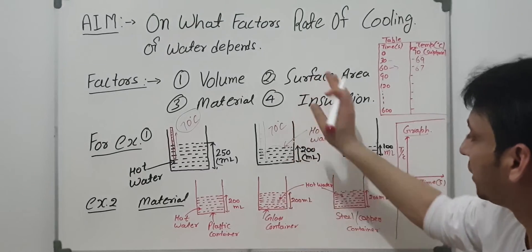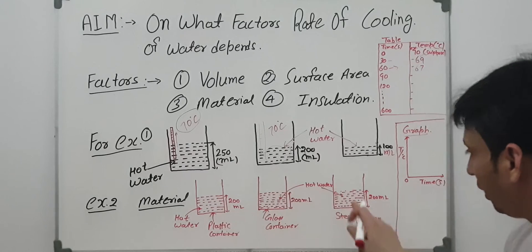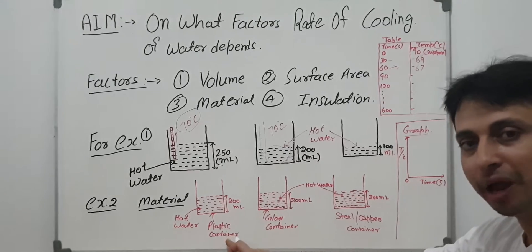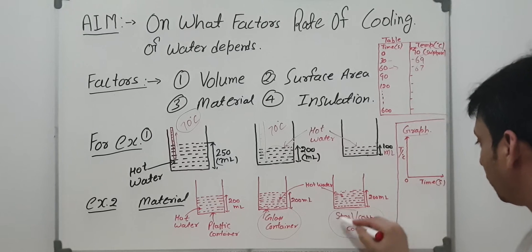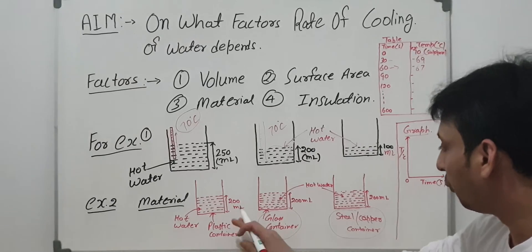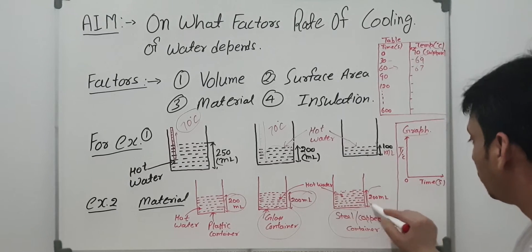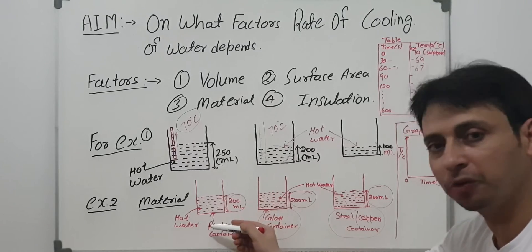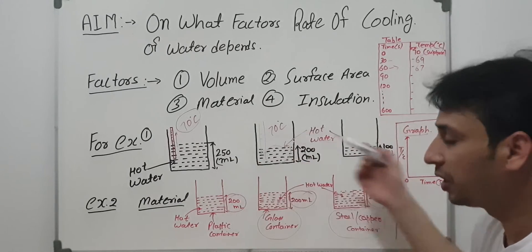Now consider the second example — material. In this diagram, I have taken three different containers: the first is a plastic container, the second is a glass container, and the third is a steel or copper vessel. The volume is kept constant — 200 ml of water in all three cases. Place the thermometer in each and follow the same steps as in the previous experiment.